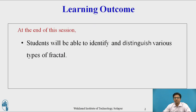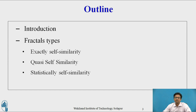At the end of this session, the student will be able to identify and distinguish various types of fractals. We are going to see fractal and fractal types, that is exactly self-similarity fractal, quasi self-similarity fractal, and statistically self-similarity fractal.